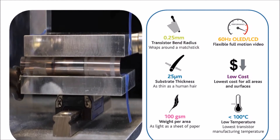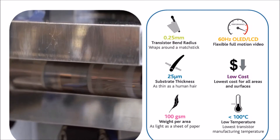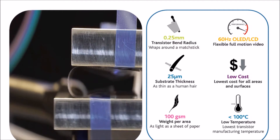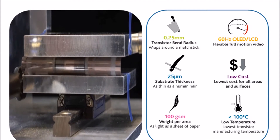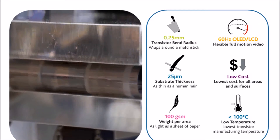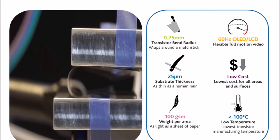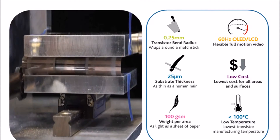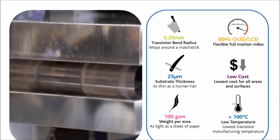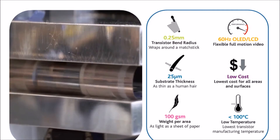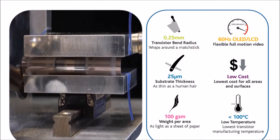Here you can see one of our transistor devices being continuously flexed. We manufacture our devices on very thin substrates, which are lightweight. After manufacture, they can be bent around a matchstick and still have the performance to drive full-frame OLED and LCD displays. Perhaps what's most exciting is the fact that they can be manufactured at such low cost. This is primarily due to the fact that our processing temperatures are below 100 degrees C, which allows us to use low-cost materials at very high manufacturing efficiencies.